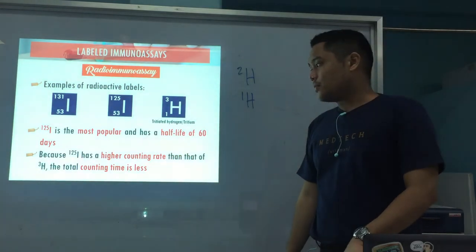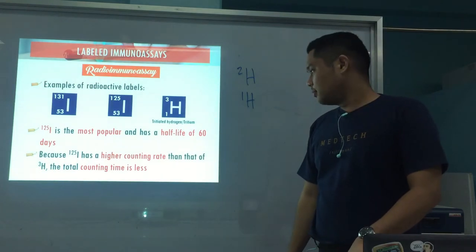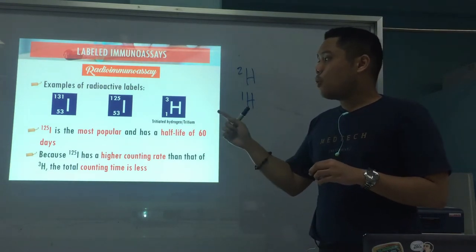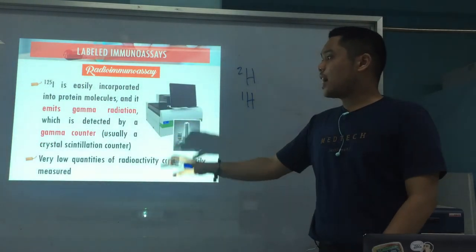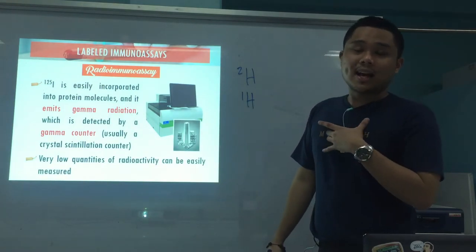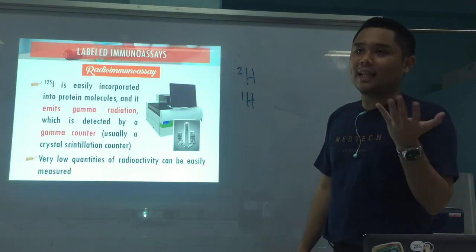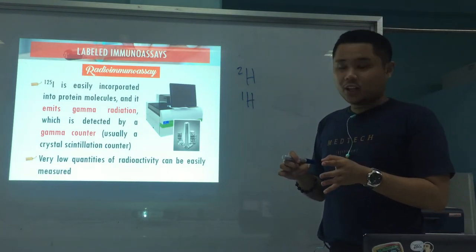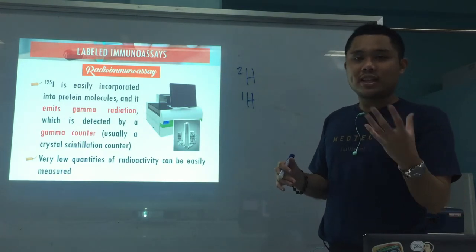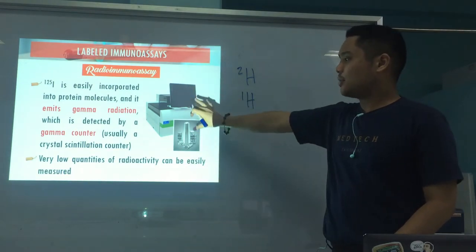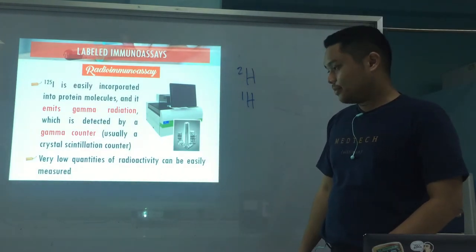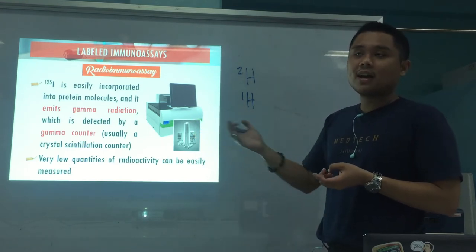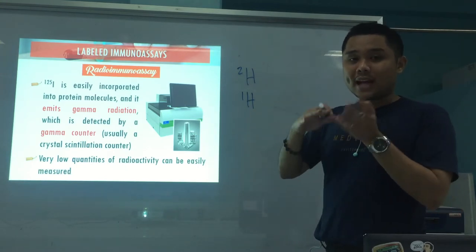Iodine-125 is the most common because it has a higher counting rate, shorter counting time, and a longer half-life of 60 days — so it can be used longer. Iodine-125 is also easily incorporated into protein molecules. Most of the analytes we detect using labeled immunoassays are proteins in nature — antigens, antibodies, hormones. It emits gamma radiation, which is then detected by your gamma counter, or crystal scintillation counter. Very low quantities of radioactivity can be easily measured.